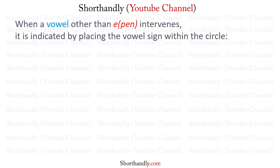When a vowel other than the vowel as in 'pen' intervenes, it is indicated by placing the vowel sign within the circle. For example, in the word EXIST, we also have to show the I vowel sound, so we just put the vowel sign within the circle.